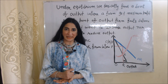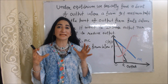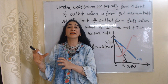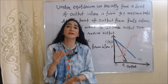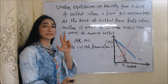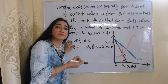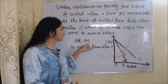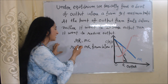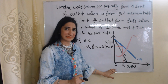Under equilibrium, we basically find a level of output where the firm gets maximum profit. At this point, the firm feels balanced — it neither wants to increase output nor reduce it. In order to get equilibrium, two conditions must be satisfied: first, MR must equal MC; and second, MC must cut MR from below.